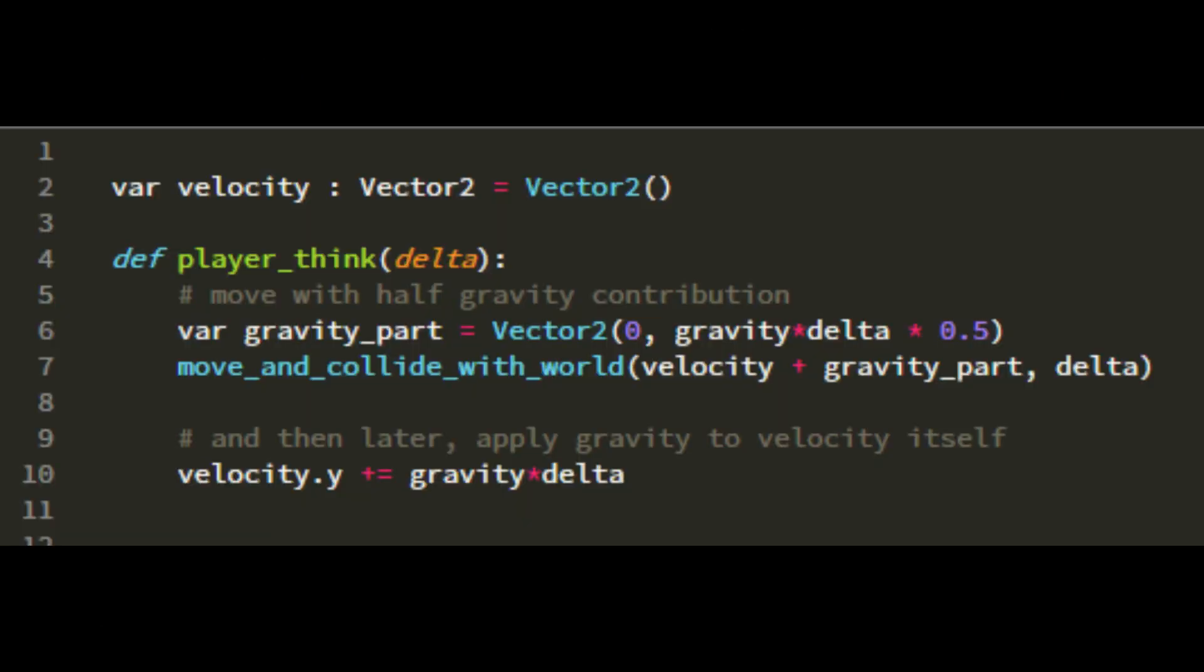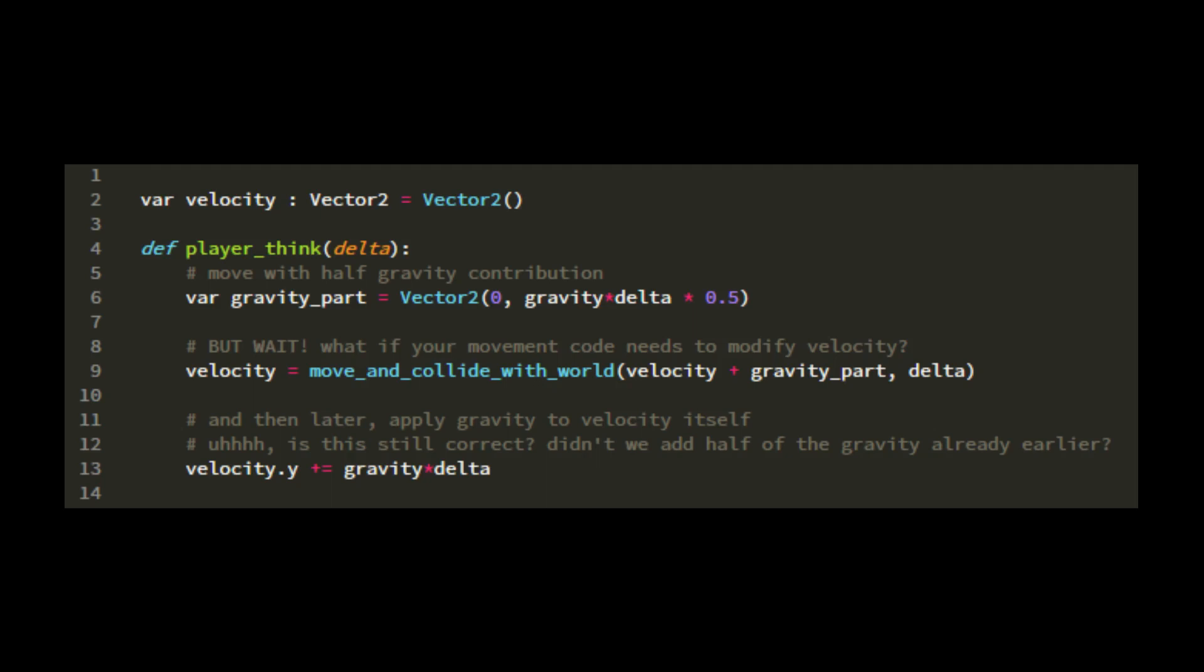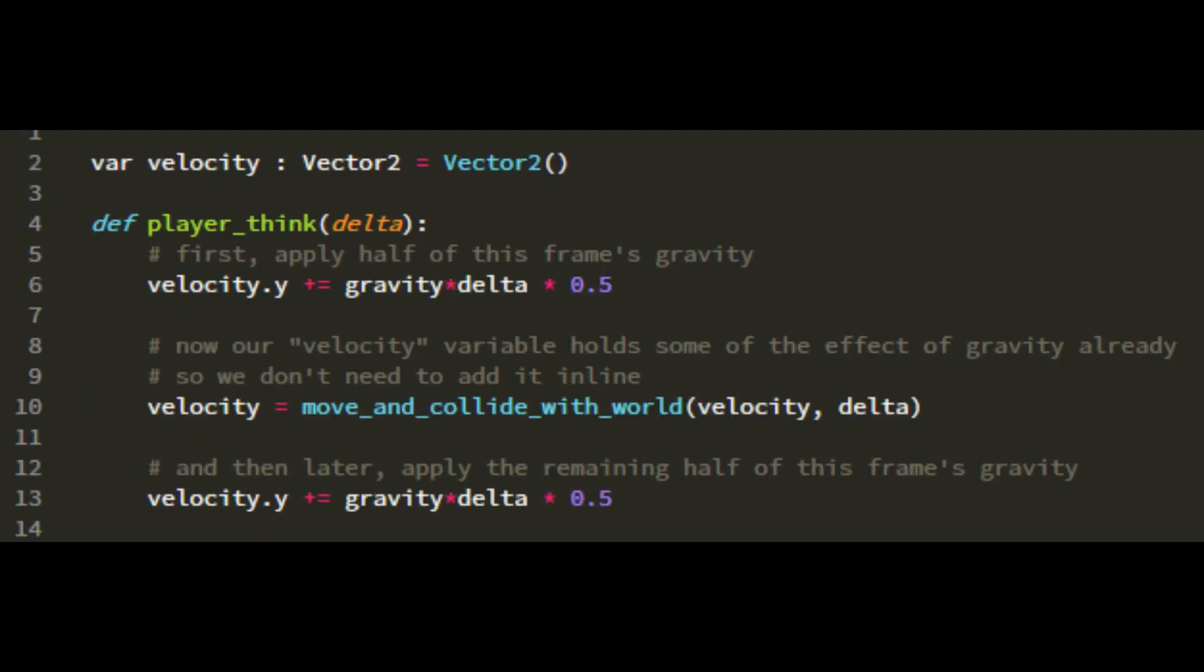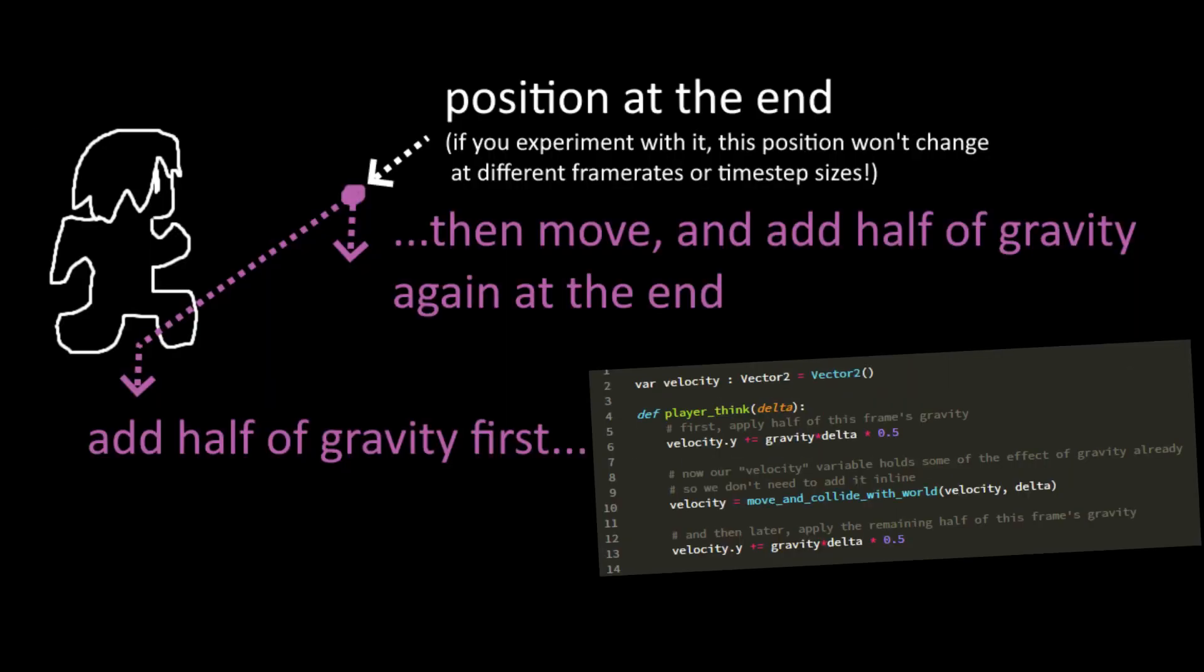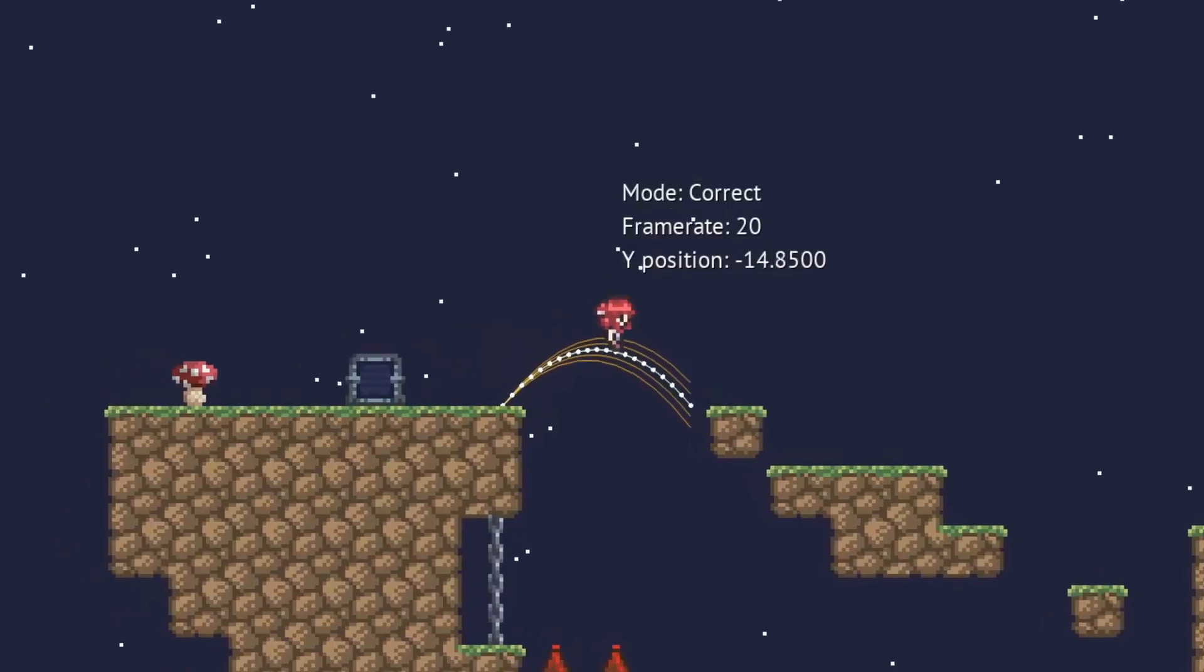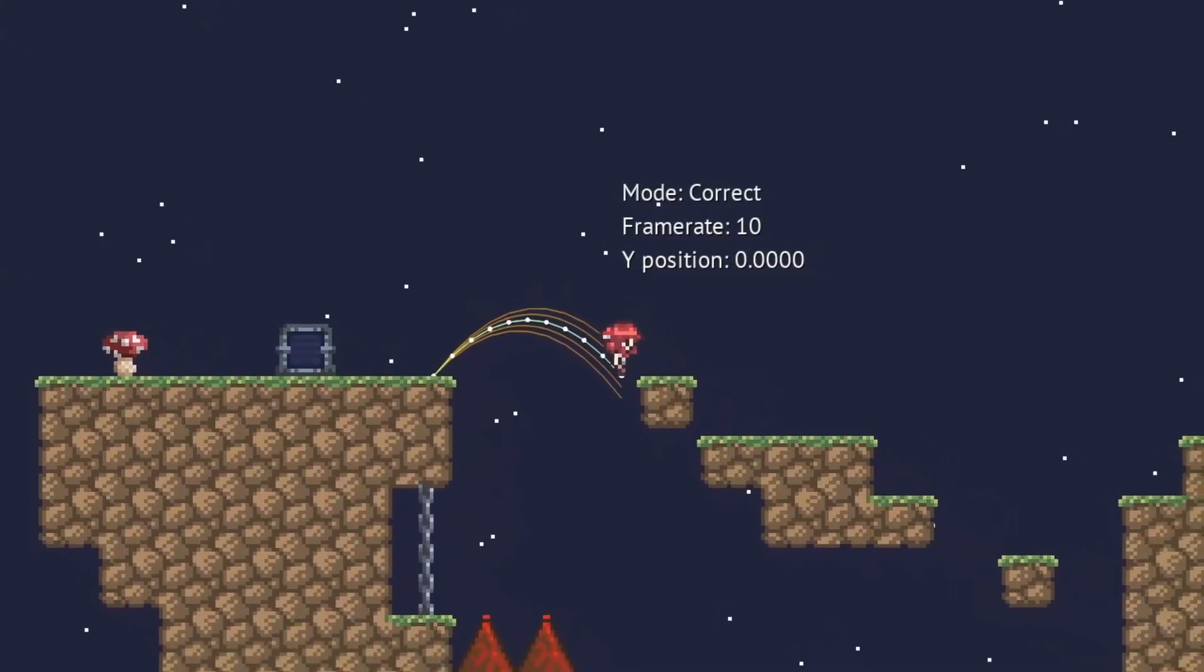So the code might look like this. But that's kind of fragile depending on how your game engine handles motion vectors. A less fragile version looks like this. You just need to split the gravity addition up into two parts, half before and half after the motion. It kind of looks like you're just taking the average of the two wrong versions, but it works out to give the right arc.